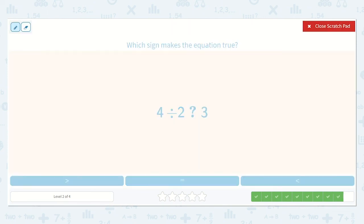Now here we have 4 divided by 2. And then we have 3. So we could count by 2 until we get to 4. 2, 4, 1, 2. That was just 2. So 2 is less than 3. So we will go with the less than symbol.